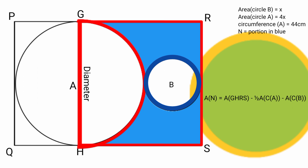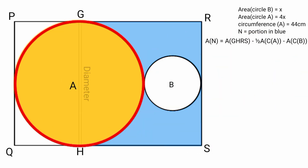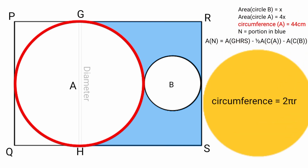So area of N equals area of GHRS minus half the area of circle A minus area of circle B. The area of circle A is yet to be found because we need the length of its radius. We have the circumference of circle A as 44 centimeters, and the formula for circumference is 2πr, so we equate 2πr to 44. Thus: 2πr equals 44.